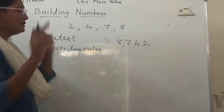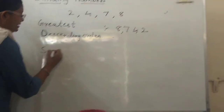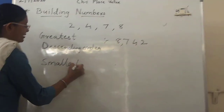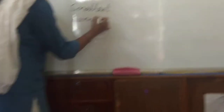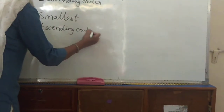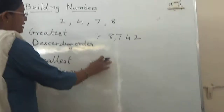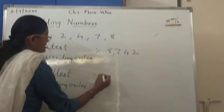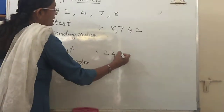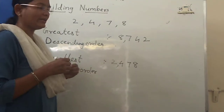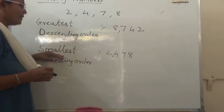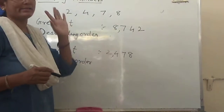Same way, if you want to build the smallest number, you have to arrange the digits in ascending order — small to big. Which is the smallest digit? 2, then 4, then 7, then 8. So 2478 is the smallest number built by using these 4 digits.